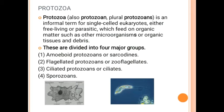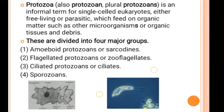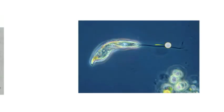Protozoans are single-celled, eukaryotic, and may be free-living or parasitic. They may feed on other microorganisms, organic matter, debris, or other biological material. Protozoans are classified into four major groups. The first group is amoeboid protozoans, also known as sarcodines.